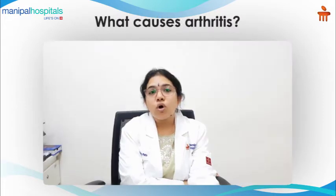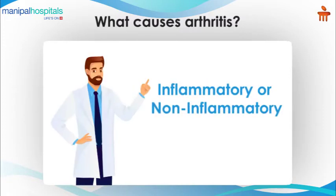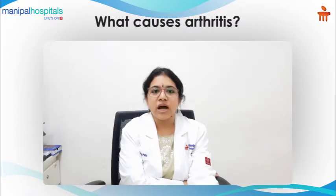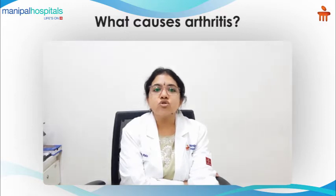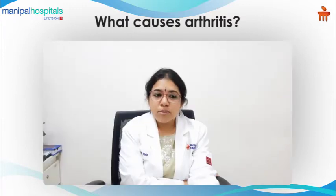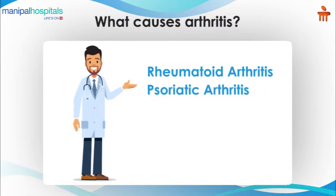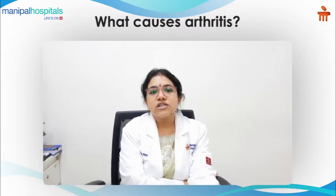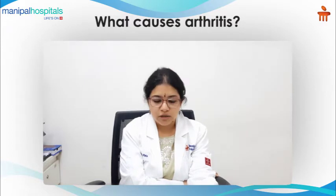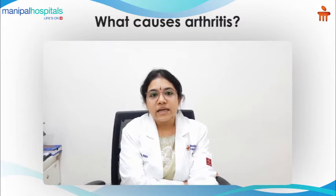What causes arthritis? Arthritis may be either inflammatory or non-inflammatory. Inflammatory arthritis refers to conditions that lead to pain and swelling of the joints due to immune dysregulation. Some common forms of inflammatory arthritis are rheumatoid arthritis, psoriatic arthritis, spondyloarthritis, and gout. These disorders are due to autoimmune or immune dysregulation and can occur at any age group and in both genders.